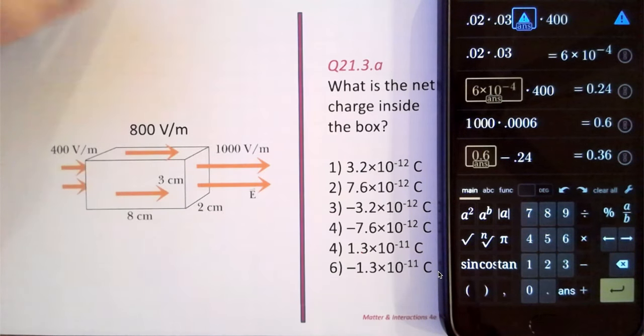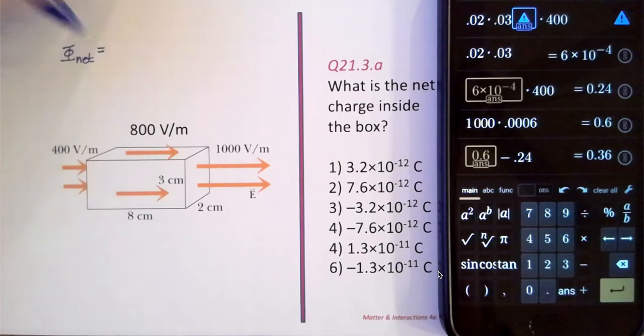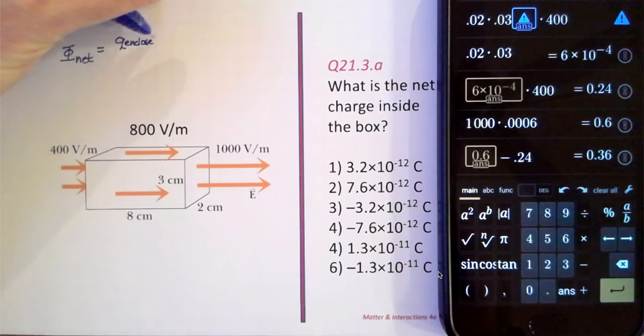Gauss's law tells us that the net flux through a closed surface, such as this box, is equal to the charge enclosed by the surface divided by epsilon zero.